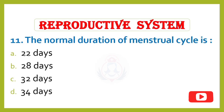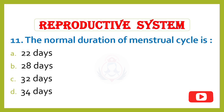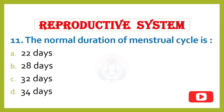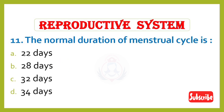Question 11. The normal duration of the menstrual cycle is: Option A – 22 days, Option B – 28 days, Option C – 32 days, Option D – 34 days. Correct answer is Option B: 28 days.